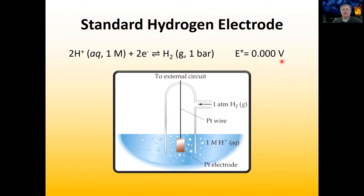What does that mean? Does that mean that this system has no reduction potential? No — it means that we actually don't have a good way of measuring absolute reduction potentials. So all reduction potentials are just measured relative to each other. And this guy — the standard hydrogen electrode's reduction potential — is what defines that overall.